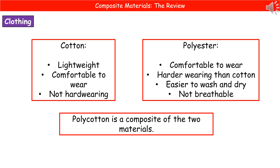So what we can do is create a composite material called polycotton, which is actually what most of the clothes you wear are made of, because it brings in properties of both polyester and cotton to make a better material for clothing.